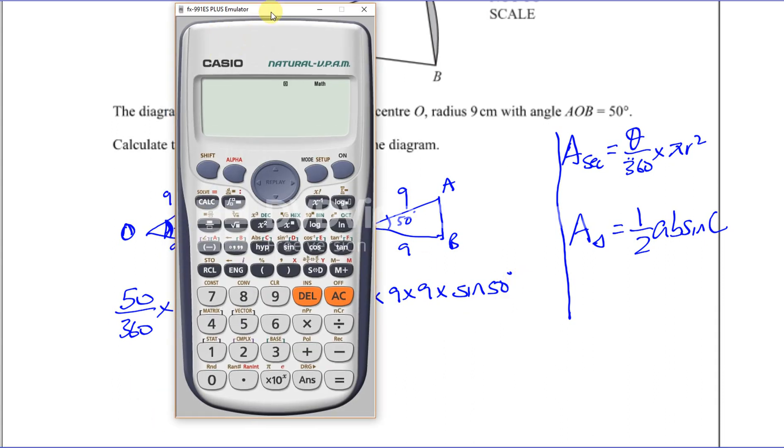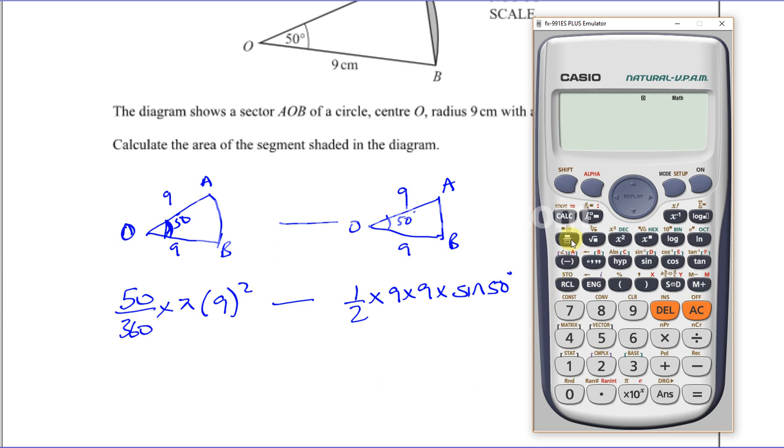What we're going to do is 50 divided by 360 times π times 9², which is 81, minus ½ times 9 times 9, which is 81 again, times the sine of 50 degrees. Now make sure that this is in degree mode, which it is, and that should give you my final answer.